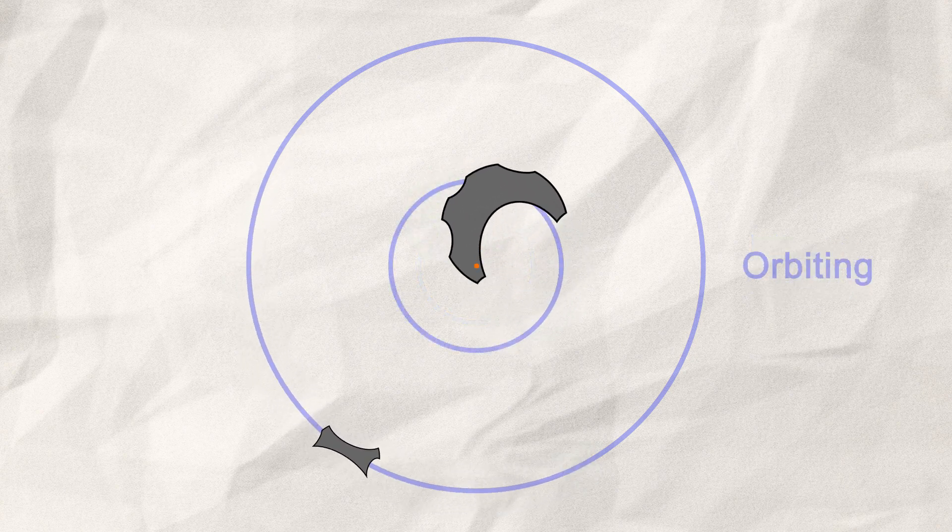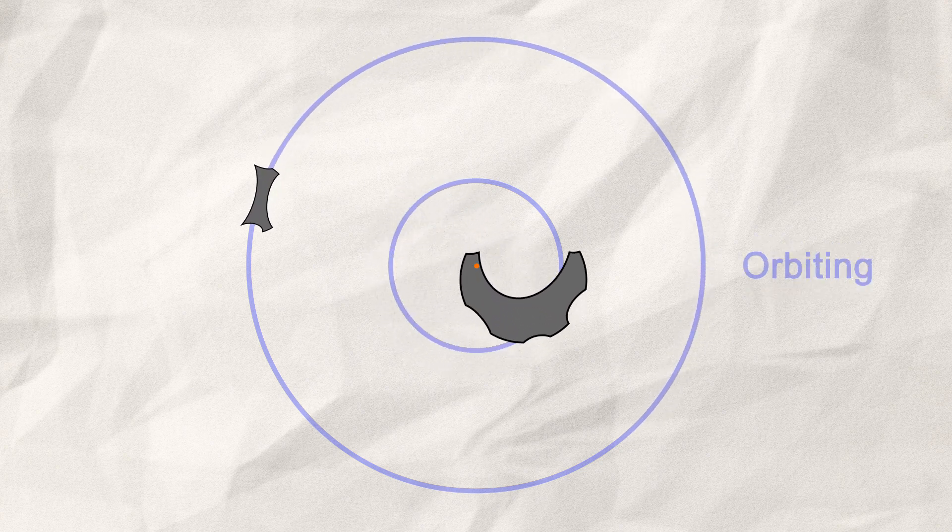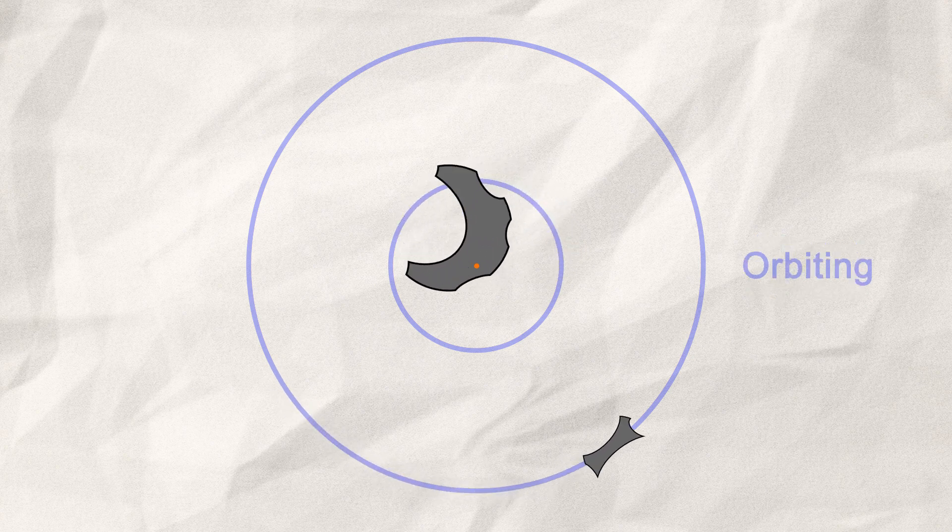And at the more extreme end, let's take two misshapen asteroids or elliptical orbits. First, one is orbiting the other, and suddenly they are a binary system, without changing anything.